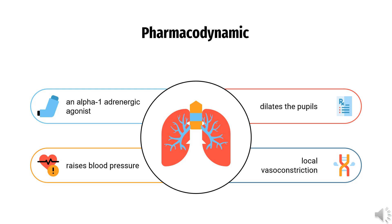Pharmacodynamics: Phenylephrine is an alpha-1 adrenergic agonist that raises blood pressure, dilates the pupils, and causes local vasoconstriction. Ophthalmic formulations act for 3–8 hours, while intravenous solutions have an effective half-life of 5 minutes and an elimination half-life of 2.5 hours. Patients taking ophthalmic formulations should be counseled about the risk of arrhythmia, hypertension, and rebound miosis.